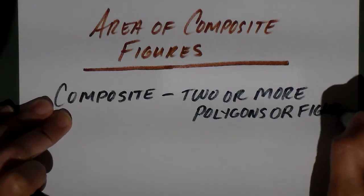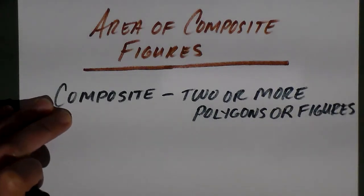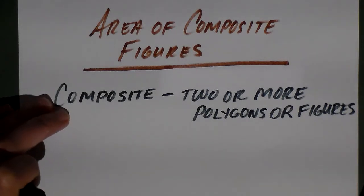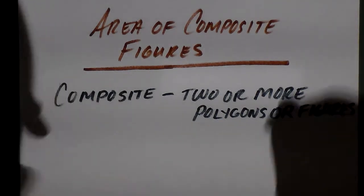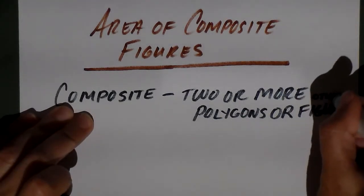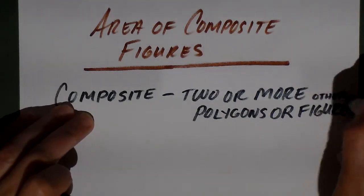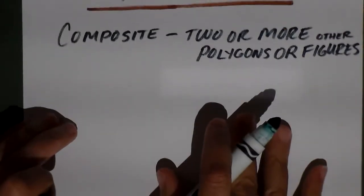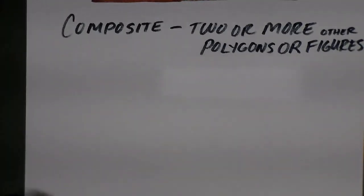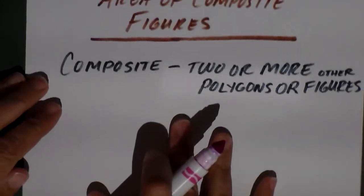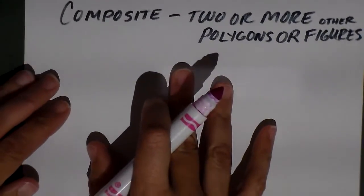When I say 'figures,' it's because they don't have to be polygons. You can have circles, semicircles — those are not polygons. So it's polygons or other figures. Let's look at a couple of examples of composite figures. When doing the area of polygons, you use your general area formulas, and I'll write those as we go.